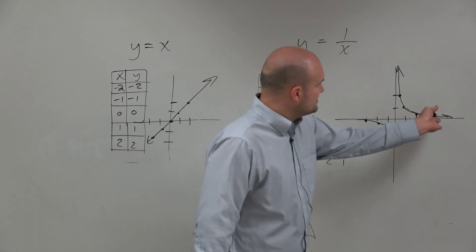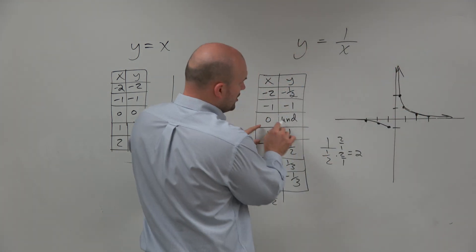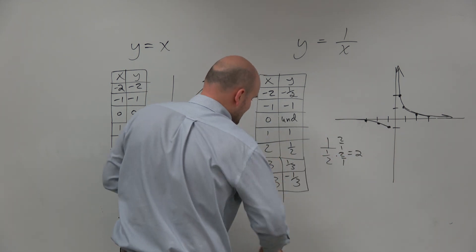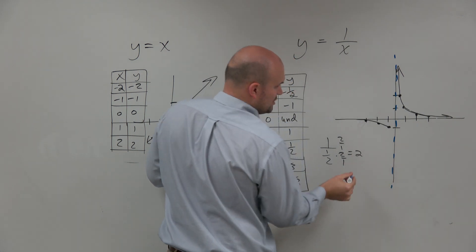We would say, well, does the graph actually cross the x-axis? Does it cut over here? We know at 0, it's undefined. So to represent an undefined value, we're going to create a vertical asymptote.